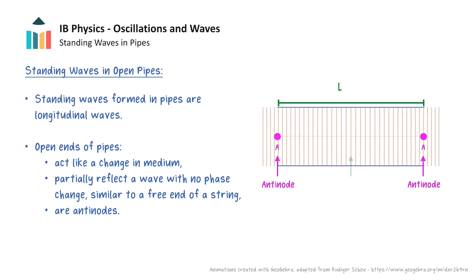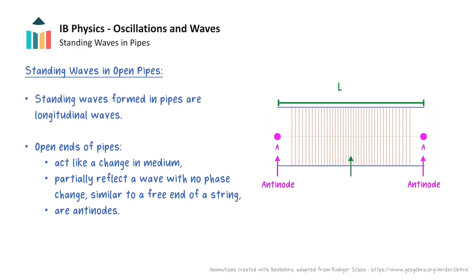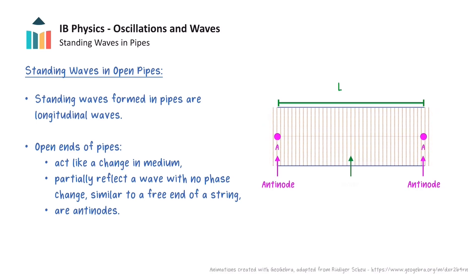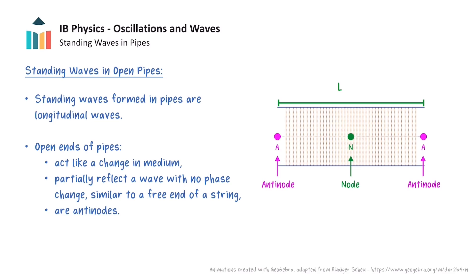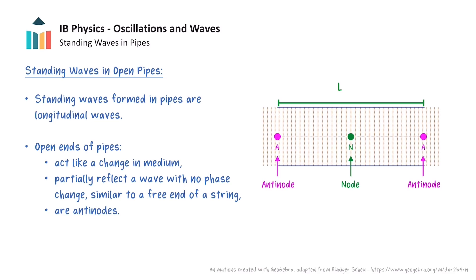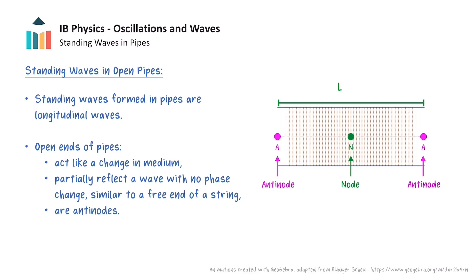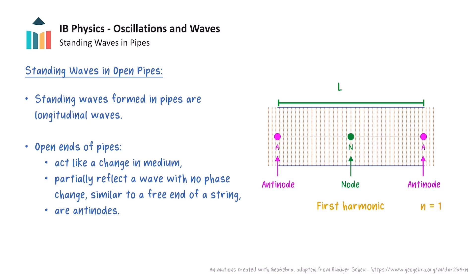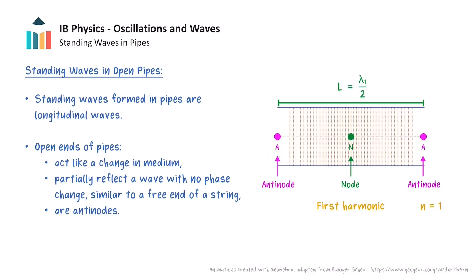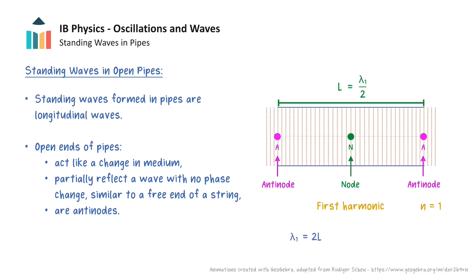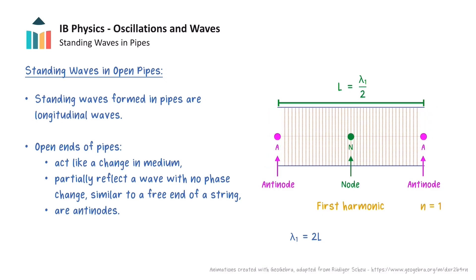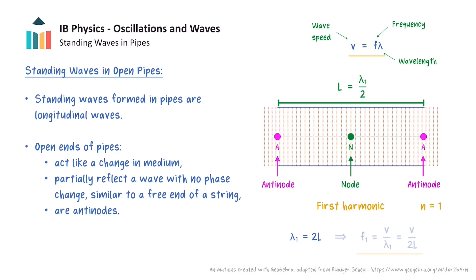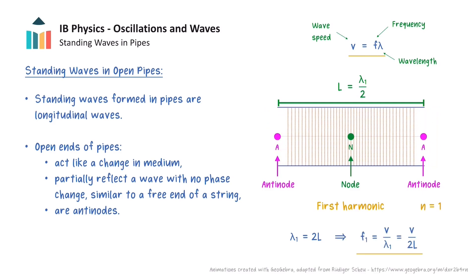In this animation, the particles in the middle of the pipe do not oscillate at all, because the incident wave and reflected wave are always in antiphase, so these particles are located at a node. This animation shows the longest wavelength of standing wave that can be formed with antinodes at each end, so this represents the first harmonic. Successive antinodes are spaced half a wavelength apart, so the wavelength of the first harmonic is twice the length of the pipe. Since wave speed is equal to frequency multiplied by wavelength, we can also calculate the frequency of the first harmonic.